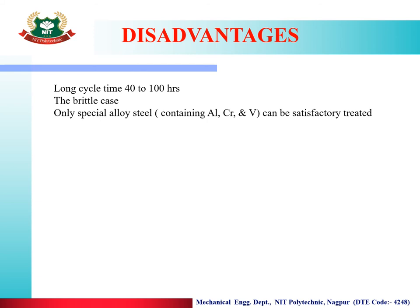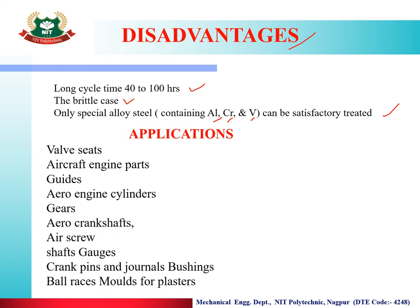Disadvantages of nitriding include a very long cycle time of 40 to 100 hours. Due to the high hardness, the surface layer can become brittle. Only special alloys containing aluminium, chromium and vanadium steels can be given this type of heat treatment. Applications of nitriding include valve seats, aircraft engine parts, guides, aero engine cylinders, gears, aircraft crank shafts, air screws, shaft gauges, crank pins, journal bearings and bushings, ball races, and molds for plasters.